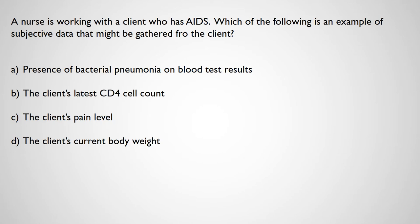Practice question: A nurse is working with a client who has AIDS. Which is an example of subjective data? Options: presence of bacterial pneumonia on blood test, the client's latest CD4 cell count, the client's pain level, or the client's current body weight. I can verify a blood test, a CD4 count, and weight by putting them on a scale. The thing I cannot verify — what is subjective to the patient — is their pain level. That is the correct answer.